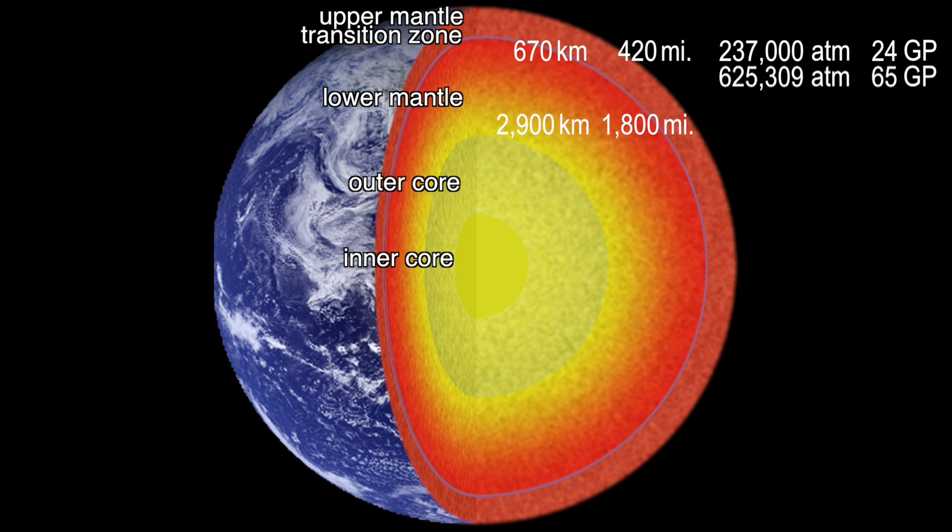Pressures in the lower mantle start at 237,000 times atmospheric pressure, or 24 gigapascals, and reach 1.3 million times atmospheric pressure, or 136 gigapascals, at the core mantle boundary.